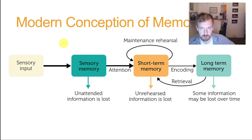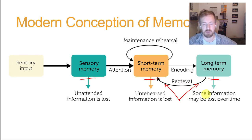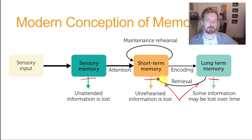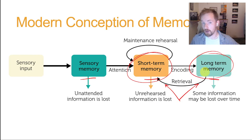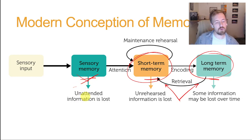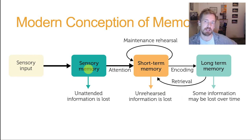This is the modern conceptualization of memory: we have three key pieces — sensory memory, short-term memory, and long-term memory. There's a good chance everyone in this class has heard of short-term and long-term memory, and there are a lot of misconceptions about them. Most of what we've talked about this semester — Miller and the magical number 7 — was short-term memory stuff, while the forgetting curve was long-term memory. This model has been validated using neuroimaging and represents how information flows as we remember things.